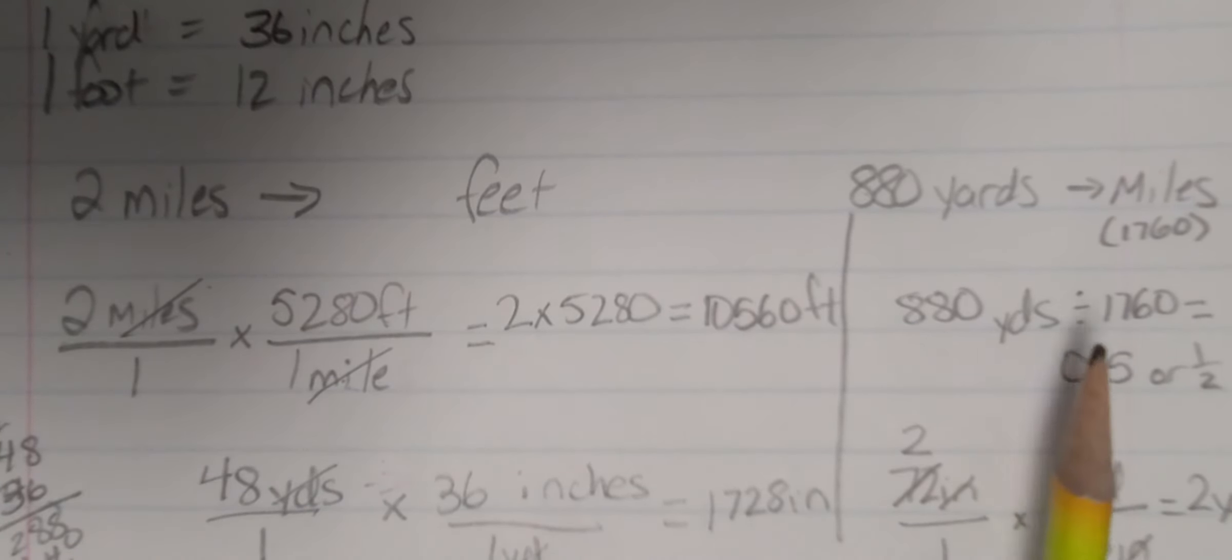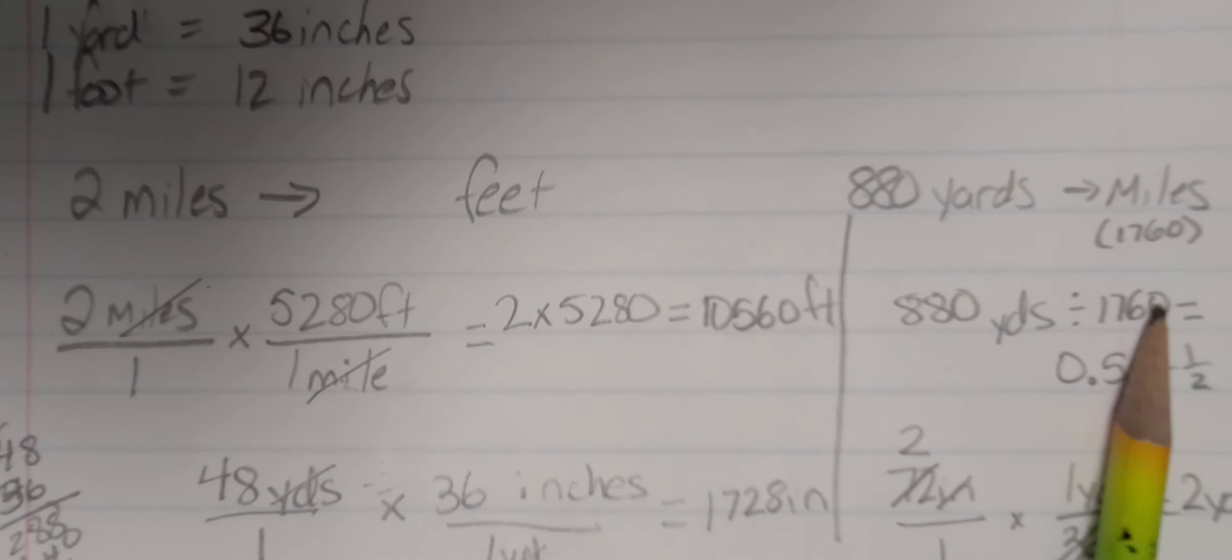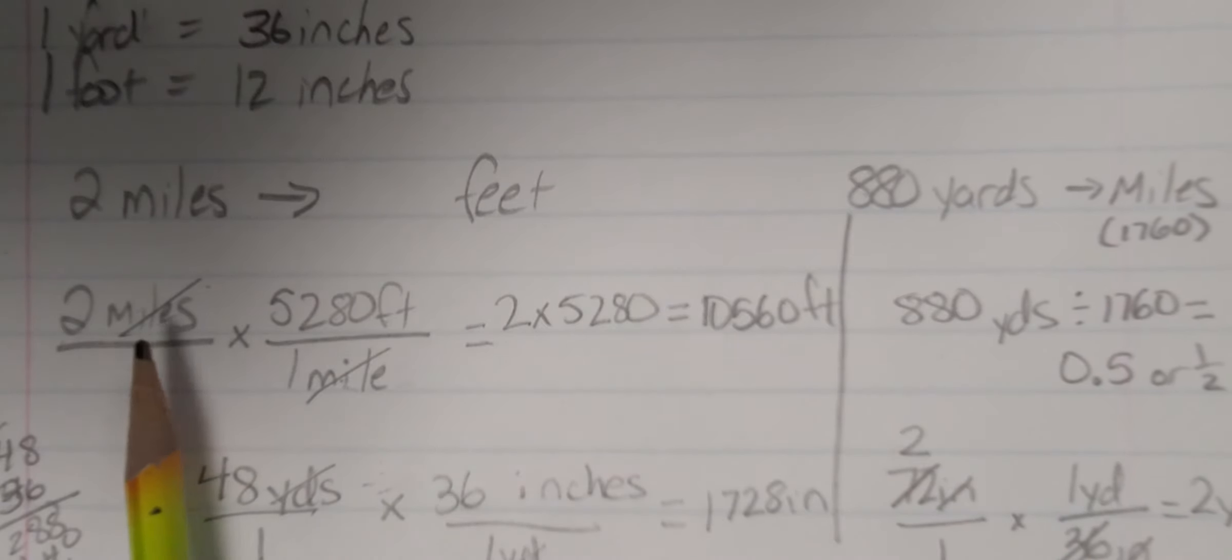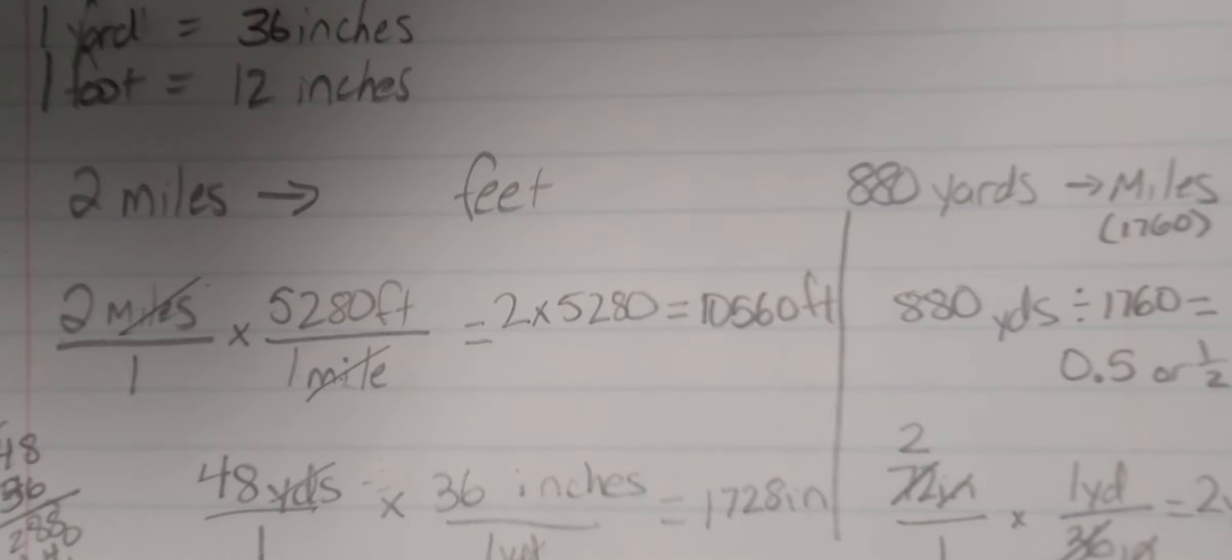Alright, and then here for our customary system, here we use the United States. You can either divide or multiply. Remember, you divide to go from small units to big units, or you multiply to go from big units to small units. Or you can go ahead and use the conversions. Alright, so this will be the customary and metric system of length. Have a good day.